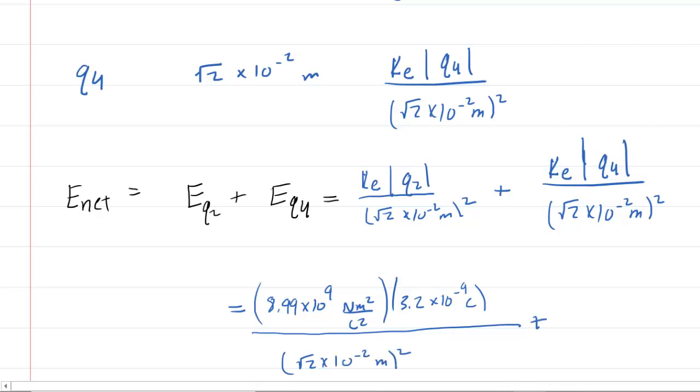And then over here, we're going to do the same thing. We're going to have the 8.99 times 10 to the ninth. We'll omit the unit here because I'm running out of room. For Q4, it's the same magnitude. All four charges have the same magnitude. And then we're going to divide that by that same distance squared.